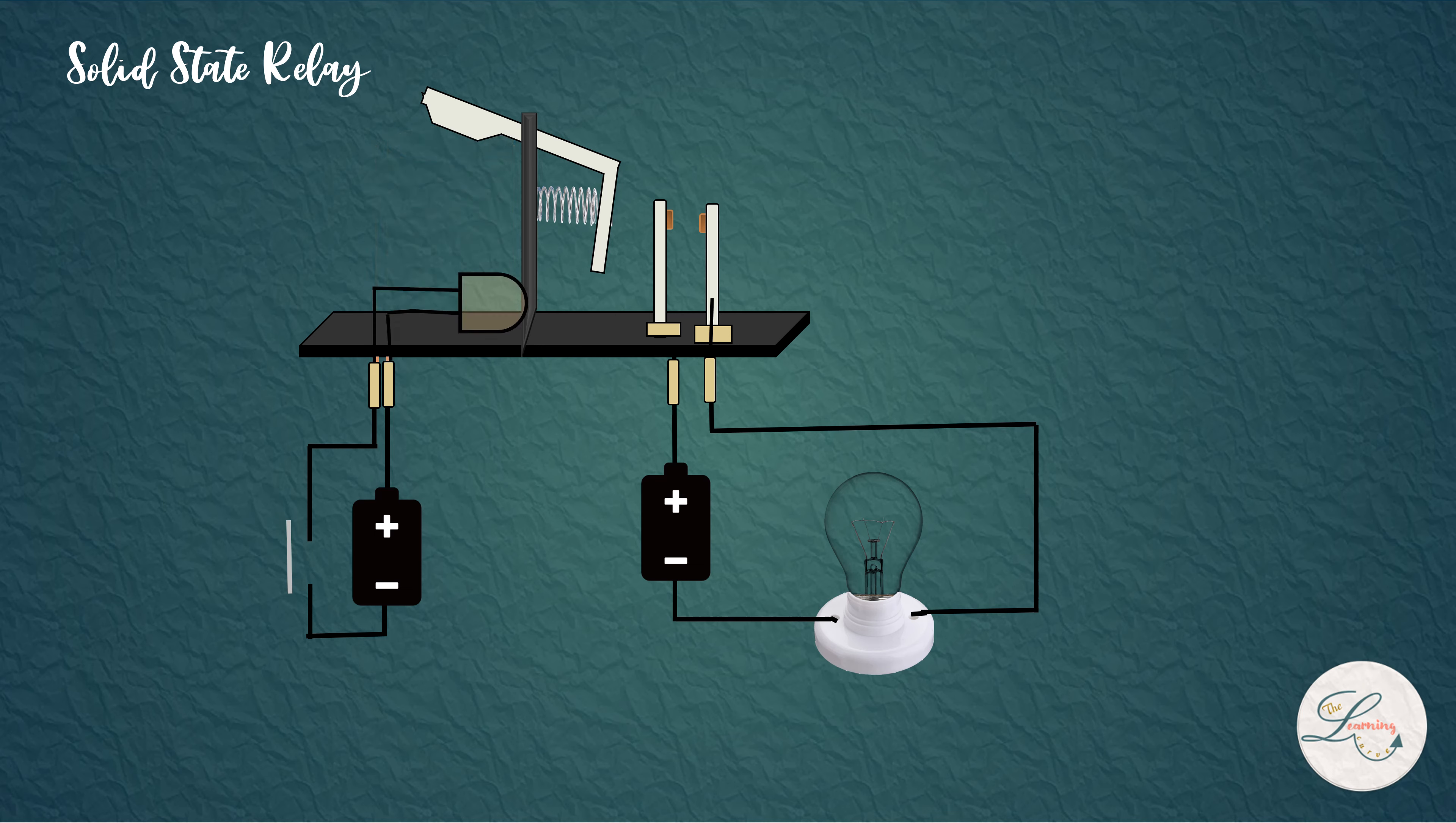Similarly, instead of armature, a phototransistor is used. A phototransistor is a device that converts light energy into electrical energy.